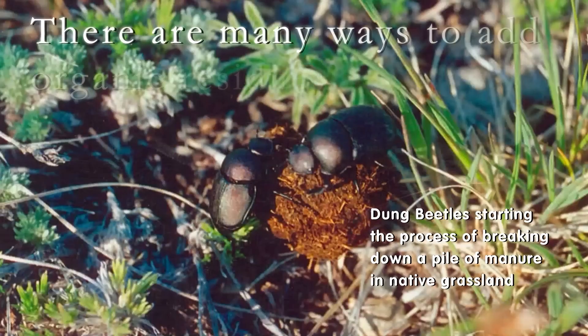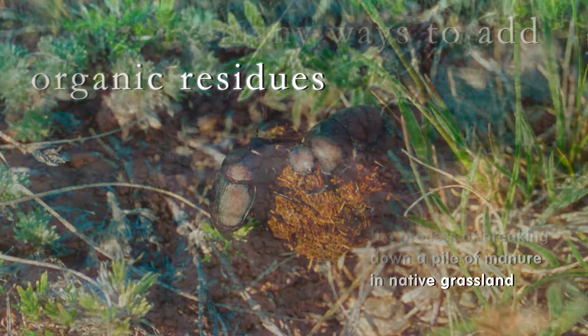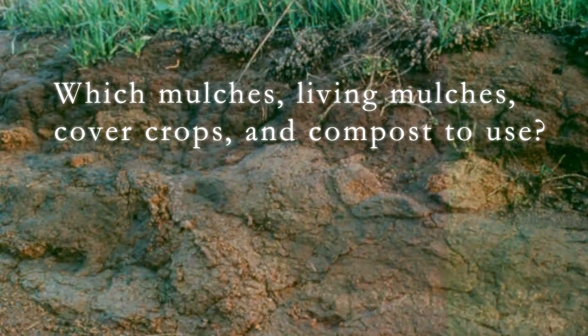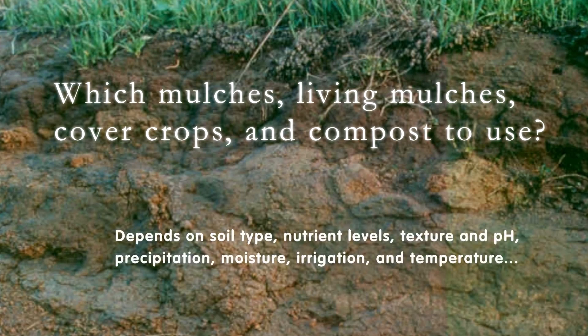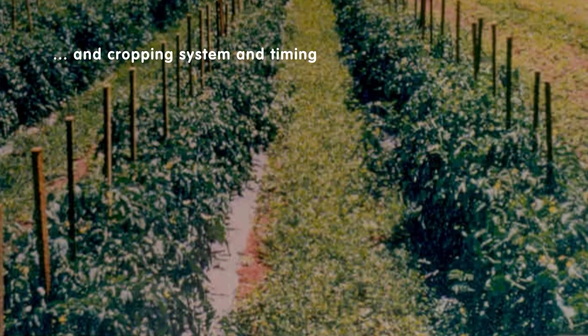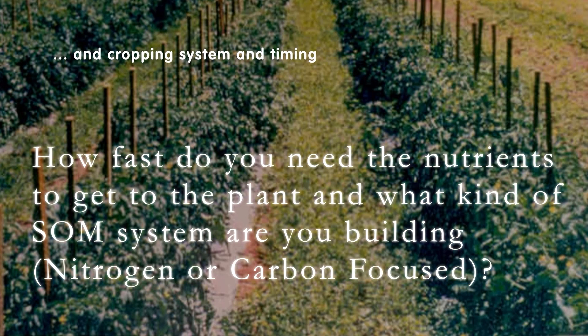How to add organic residue — there are so many different ways, so let's start looking at them. Which mulches, living mulches, and cover crops, and compost to use depends on our soil type, nutrient level, soil texture and pH, precipitation levels, moisture, irrigation, and temperature. It also depends on climate, soil, and what your cropping system is, and how fast you need the nutrients to get to the plant.